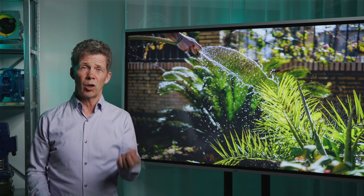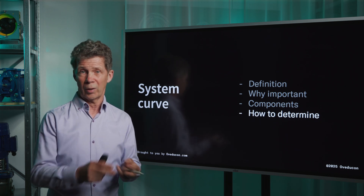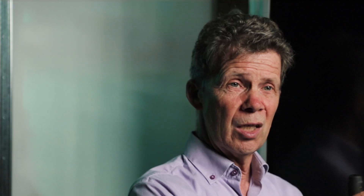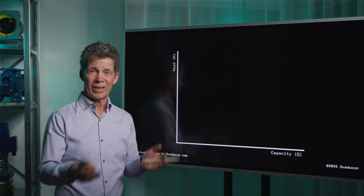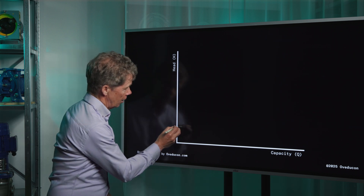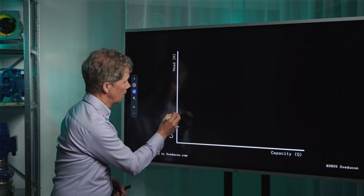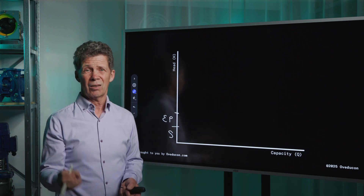It is very important that you know how to determine your system curve. And if you want to determine your system curve, you have to calculate the three different components: static head, friction losses, and also your end pressure. For both your static head and your end pressure, if your flow is going up, your static head and your end pressure stay the same. So for every amount of flow, your pump has to overcome a certain head. But for your friction losses or dynamic head, if your flow is going up, your friction is going up.